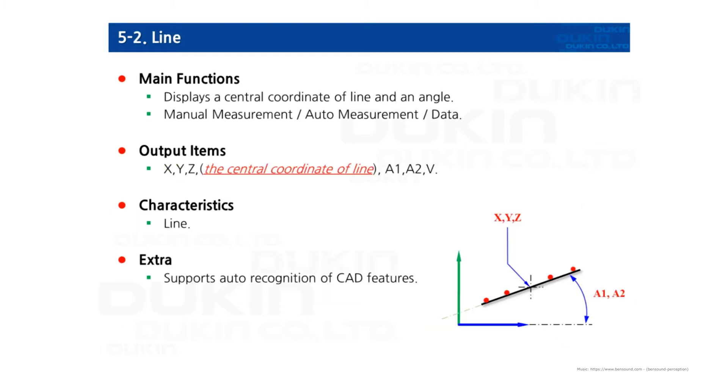And then line. The minimum measuring point required of measuring a line is two points. It outputs X, Y, Z, and A1, A2. The place where X, Y, Z coordinate comes out is the center of the line. The A1 and A2 values are degrees of the feature's axis. And the reference axis for each value determines with the closest axis.